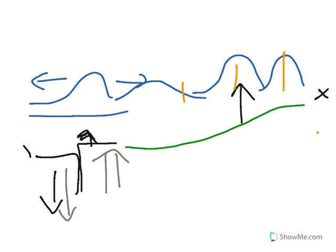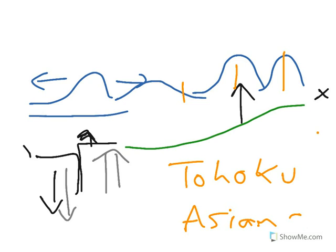We've actually had two quite big important tsunamis recently. Tohoku, which is the one that hit Sendai and Sendai region, and the Boxing Day tsunami, which is known more recently as the Asian tsunami. Boxing Day tsunami in 2004 and Tohoku earlier this year in 2011.